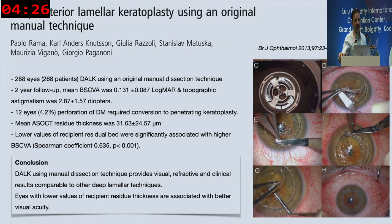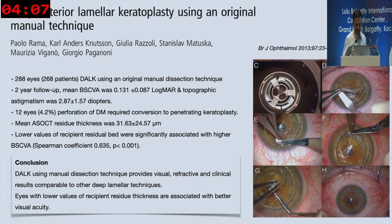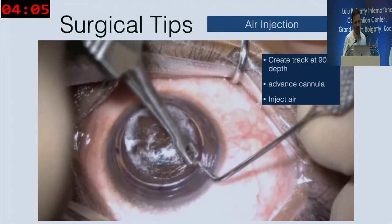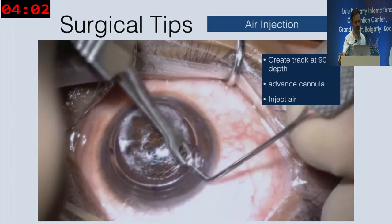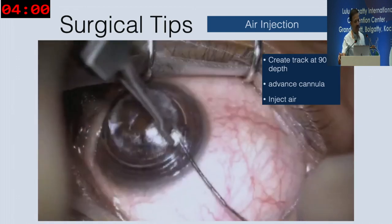This is a nice paper from Paulo Rama, 2013, in a large series of 288 eyes performing manual DALK. The rate of perforation was low — only about 4.2%. Induced astigmatism was also low, especially in lamellar keratoplasty because you're not opening the anterior chamber. The majority of patients had 20/40 or better.